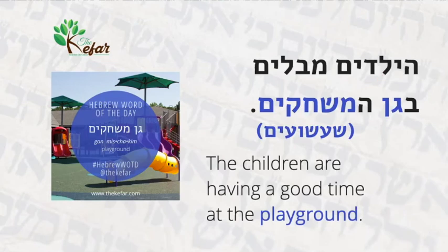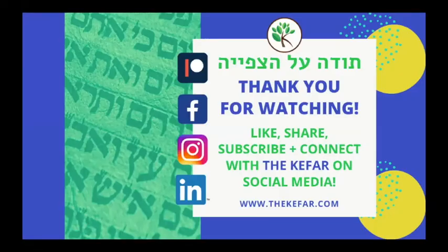So the full sentence: Hayeladim Mevalim — the children are having a good time or enjoying themselves — Began Hamishakim, at the playground. Or you can also say Began Hashashuim, at the playground.